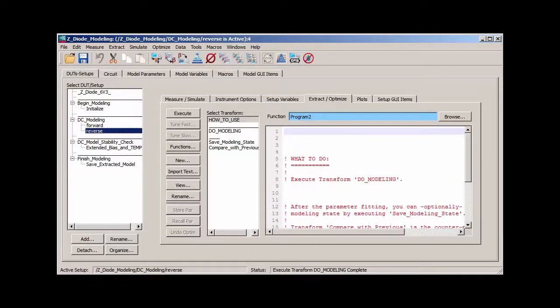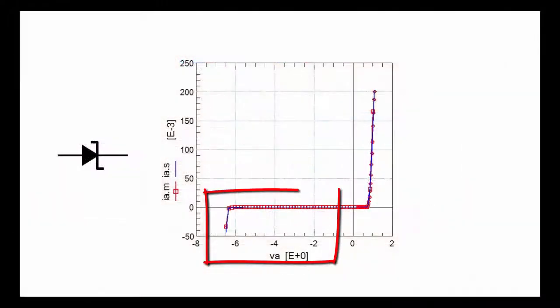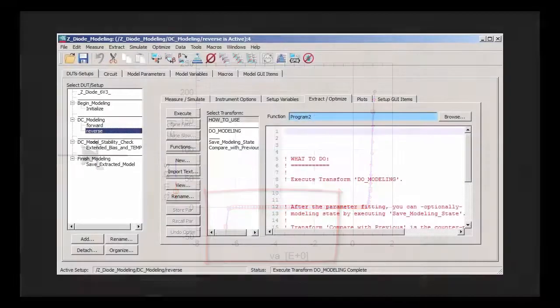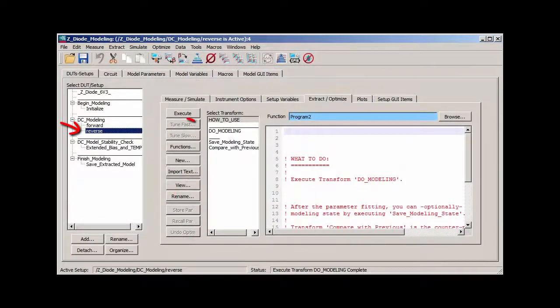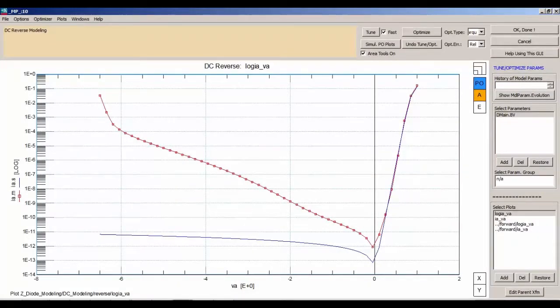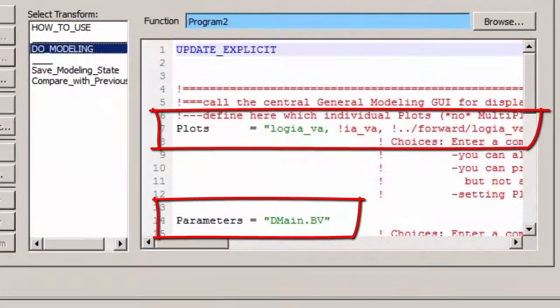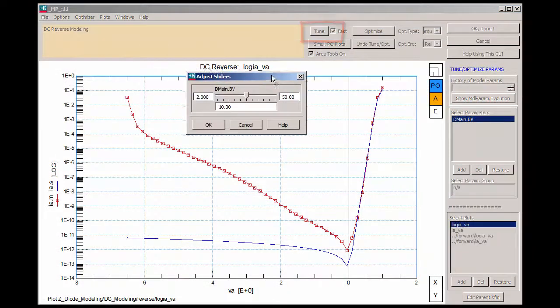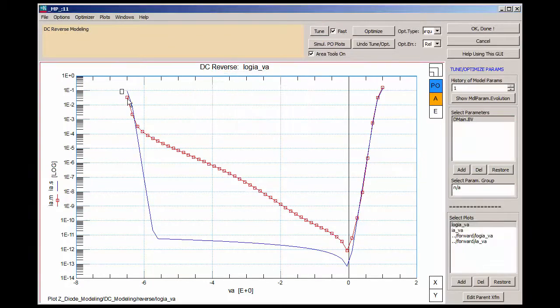The next step is the DC reverse modeling, which is important to fit well since this mode is the most commonly used application of a Zener diode. I select setup reverse and execute transform do modeling. We see the same custom UI now aimed at modeling the reverse bias region and showing the reverse breakdown parameter BV. Like before, we had specified this plot and parameter by the two variables in the calling transform. I tune the breakdown voltage parameter BV to fit the reverse Zener voltage.